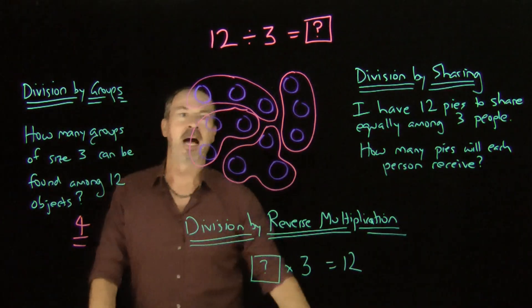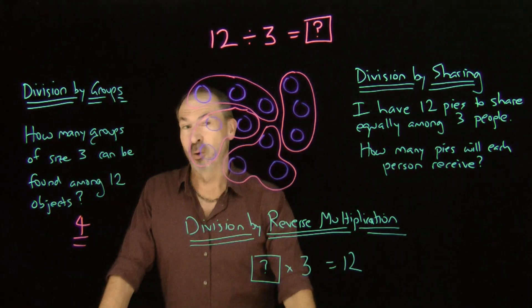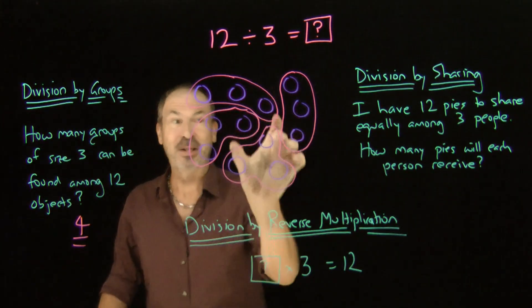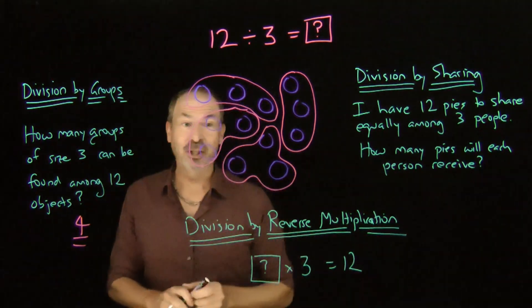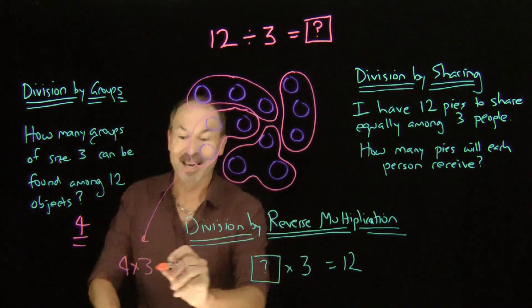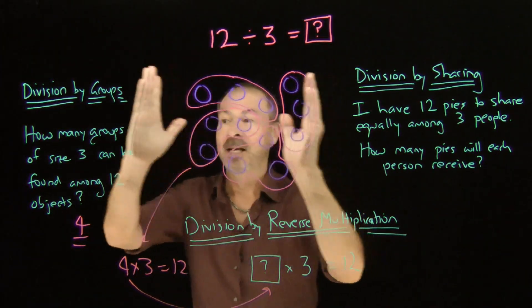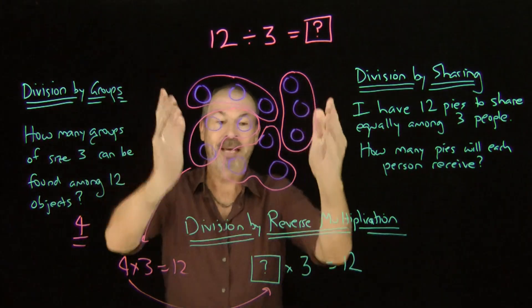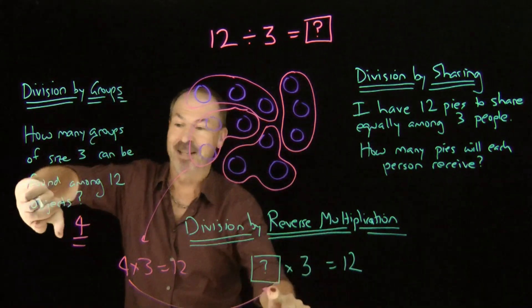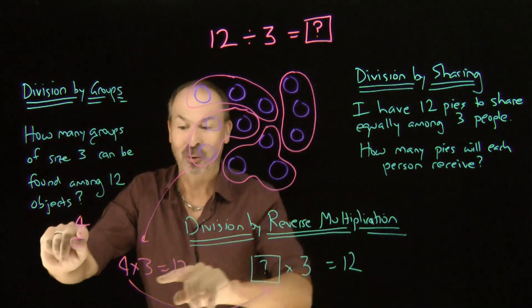There is a picture that answers the division problem when thinking about division by groups. But here's the lovely thing: if I look at this picture, I can also see it's really 4 groups of 3 — that's repeated addition. I've got 3, 3, 3, and 3, and we call repeated addition multiplication. So I can interpret this picture as 4 groups of 3 making all 12 dots — I've just answered the division problem by thinking about reverse multiplication. This one picture can be interpreted as division by groups and also as a multiplication problem, so both interpretations must have the same answer of 4.